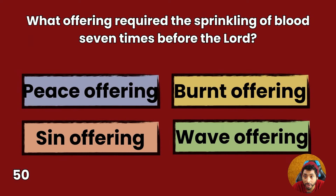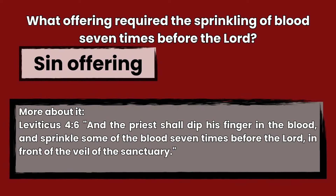Question 50: What offering required the sprinkling of blood seven times before the Lord? Peace offering, burnt offering, sin offering, or wave offering? Answer: Sin offering. Leviticus 4:6 — And the priest shall dip his finger in the blood and sprinkle some of the blood seven times before the Lord in front of the veil of the sanctuary.